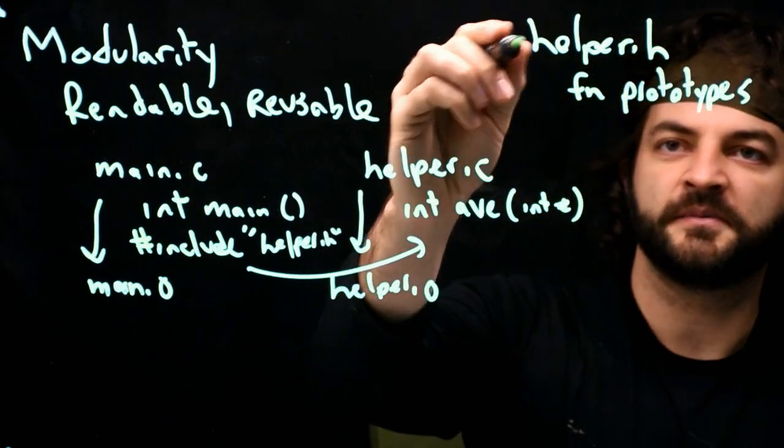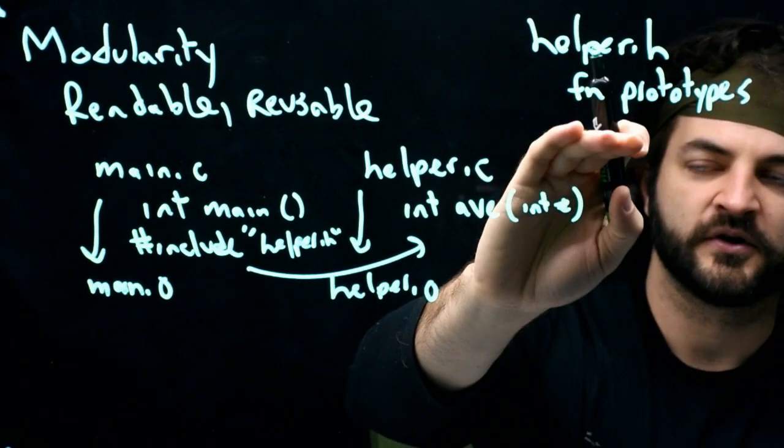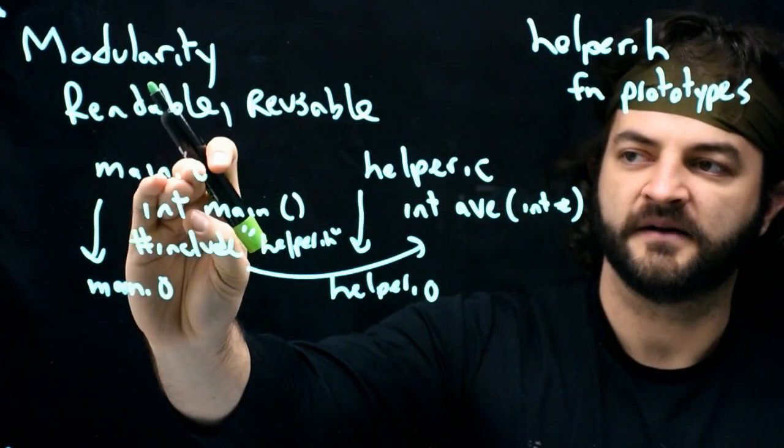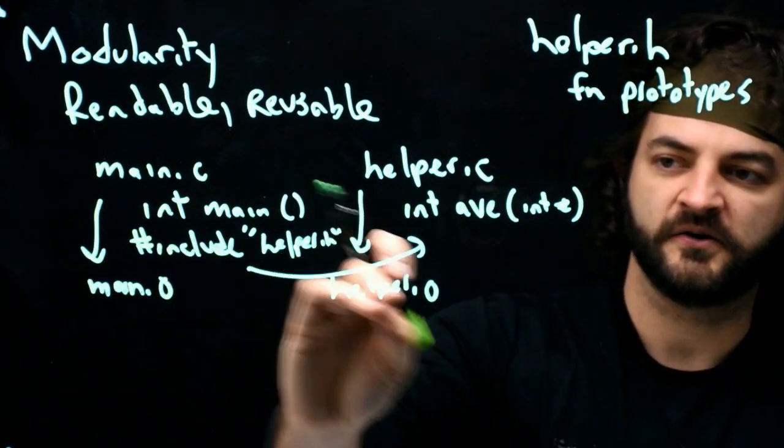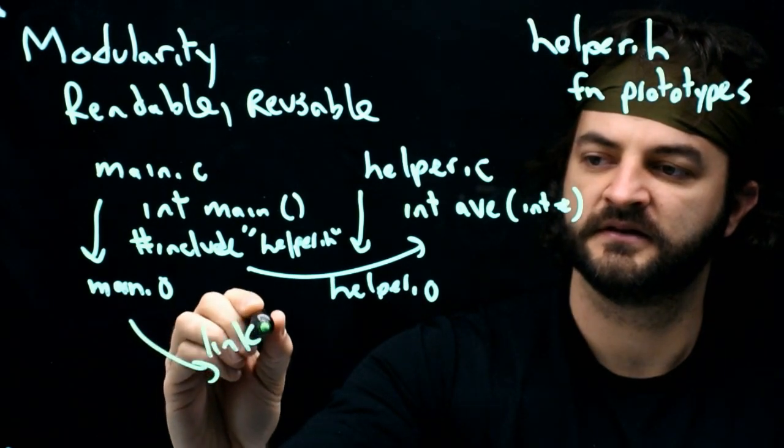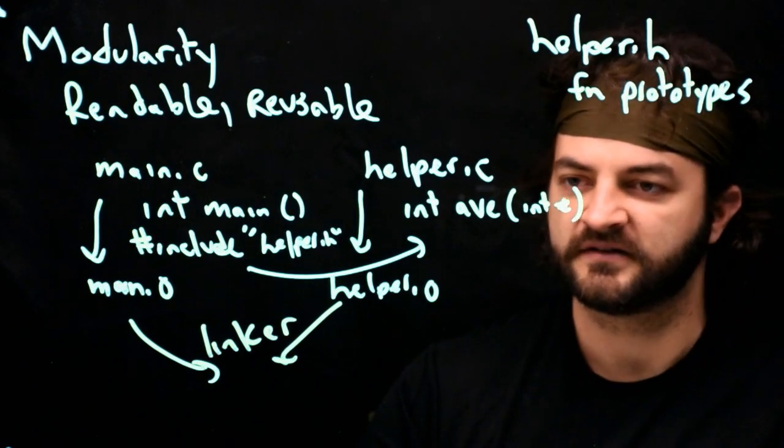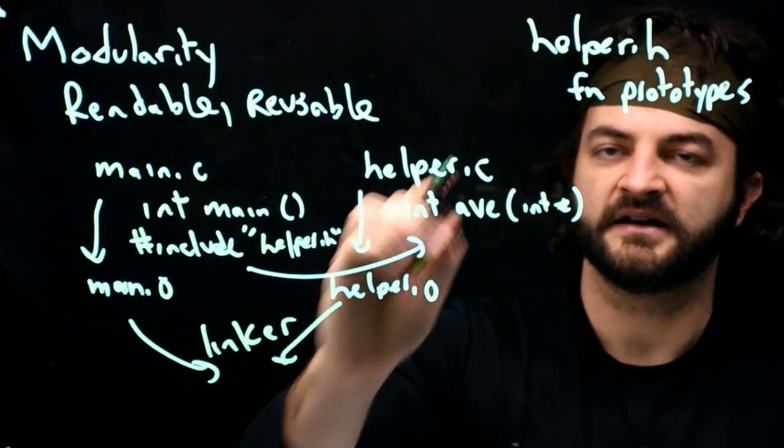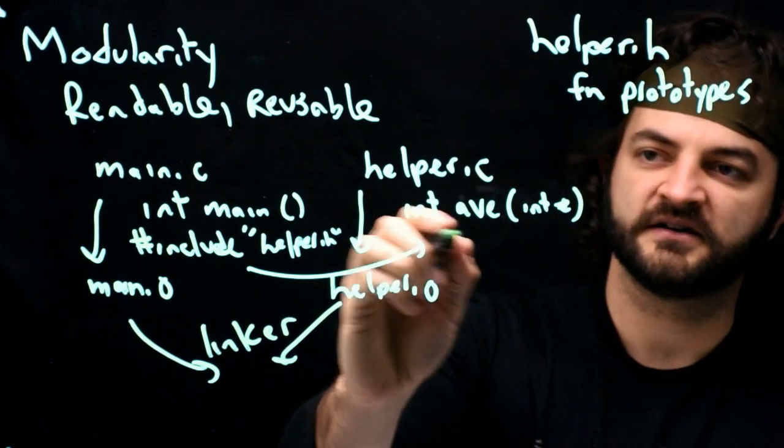Helper.h comes in and says, I am declaring a spot for my functions. That spot gets reserved in main.o and helper.o, and the linking step of the compilation process is going to assign the final location and grab the content from helper.c.